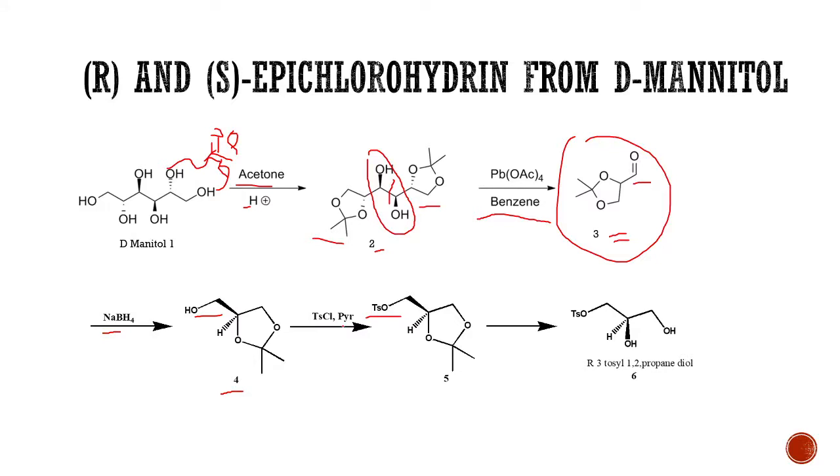As you know, p-toluenesulfonyl chloride can be used to protect the OH. Now we have compound number 5, which is a tosyl protected primary alcohol.